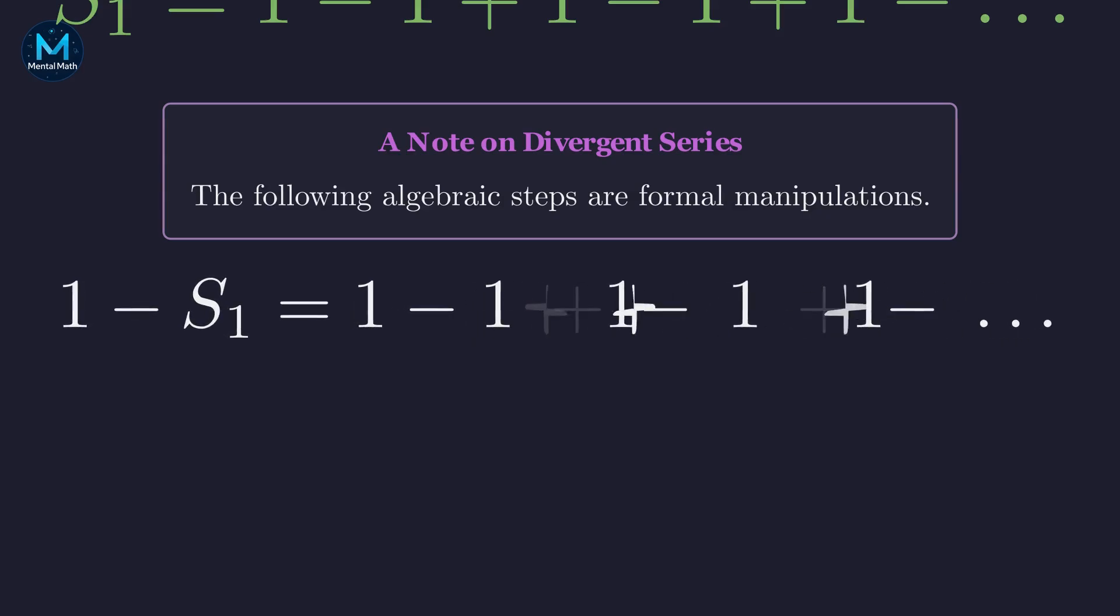After distributing, the right-hand side becomes 1 minus 1 plus 1 minus 1, and so on. We must recognize that this resulting series is identical to our original definition of S sub 1. This leads to the simple algebraic equation: 1 minus S sub 1 equals S sub 1.